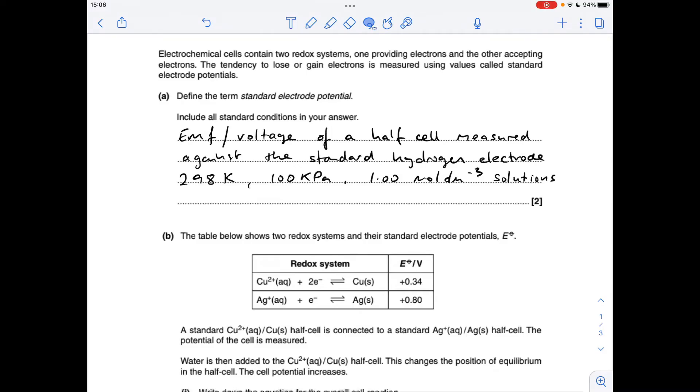Okay, so we'll make a start. The definition for standard electrode potential is the EMF or voltage of a half cell measured against the standard hydrogen electrode at 298 Kelvin, 100 kilopascals, and 1 mol per decimeter cubed solutions.